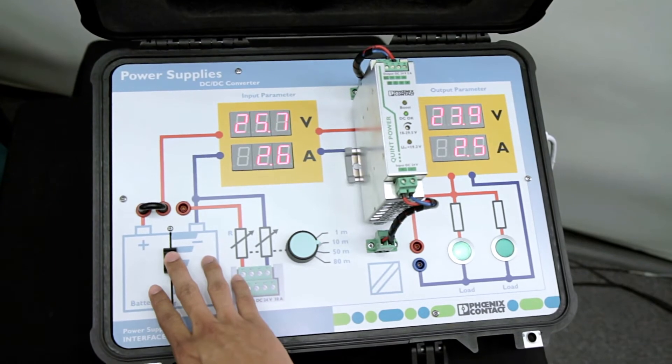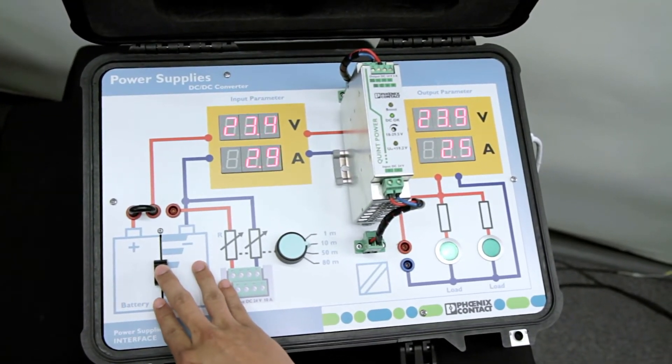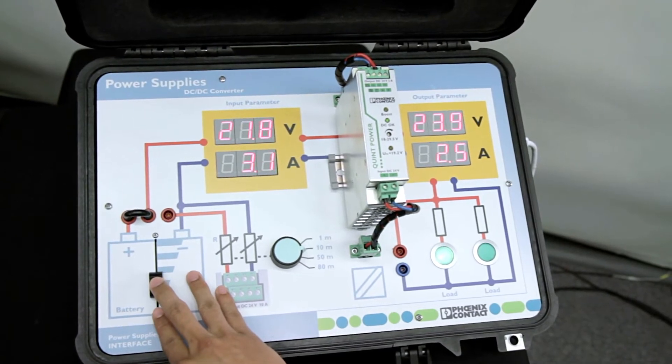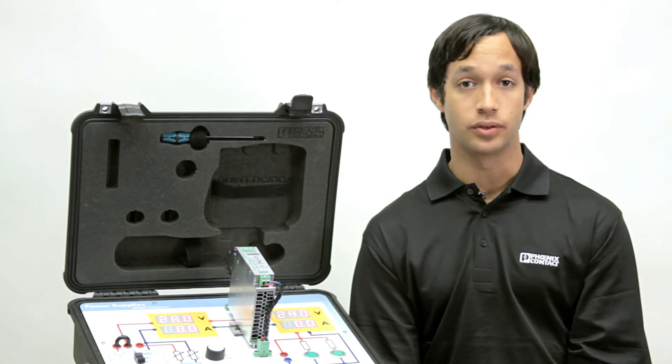We then simulate the battery discharging over time. Without the DC to DC, as the voltage of the battery drops, the voltage to your PLC drops. But with the DC to DC converter, it's still capable of supplying a constant voltage by pulling more current from the battery.